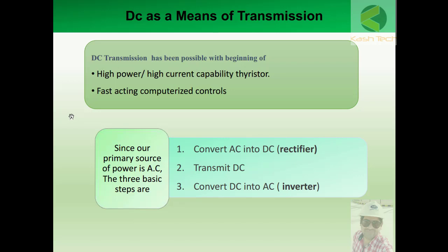DC transmission has been made possible with the development of high-power, high-current capability thyristors. As power electronics advanced, it became possible to produce thyristors with very high current capability that can deliver power at very high capacity.